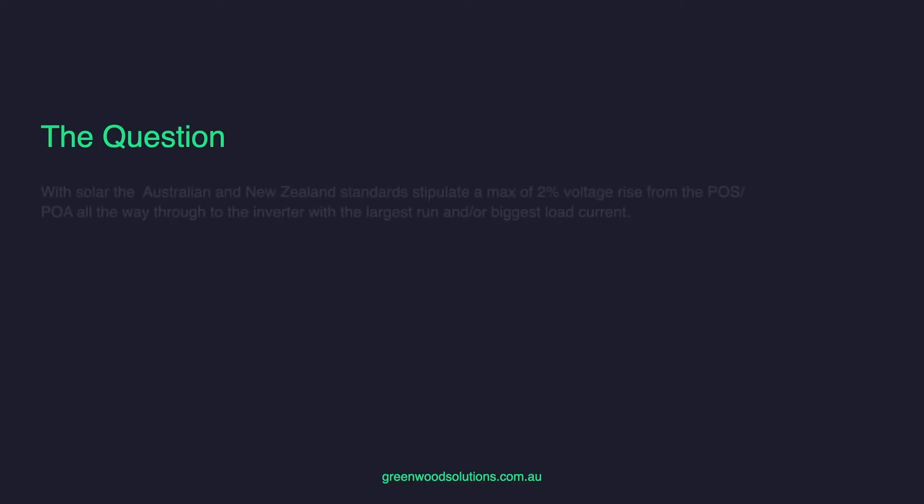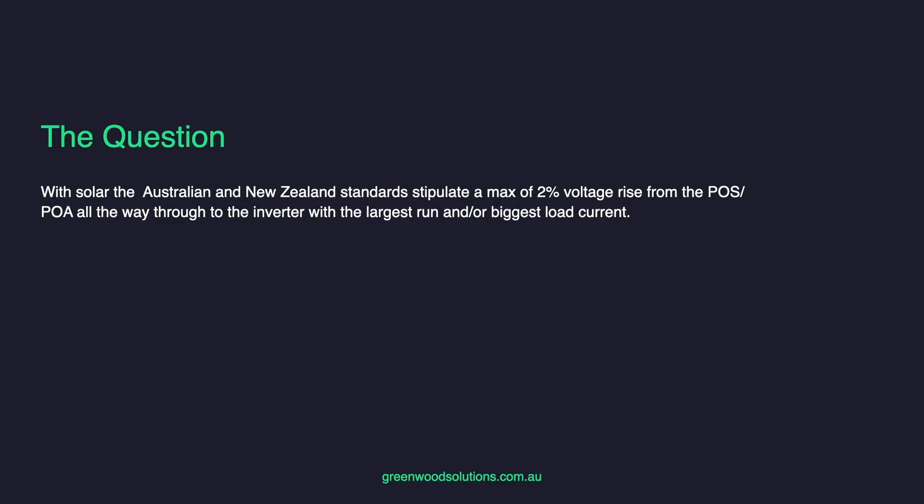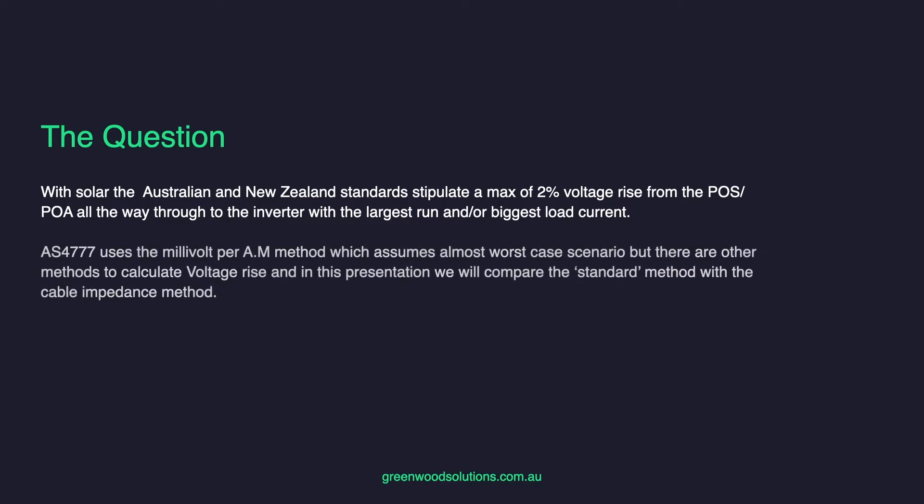The Australian and New Zealand standards stipulate a maximum of 2% volt rise from the point of supply all the way through to the inverter with the largest run and/or the biggest load current. AS4777 uses the millivolt per amp metre method, which assumes almost the worst case scenario, but there are other methods to calculate voltage rise. In this presentation, we will compare the standard method with the cable impedance method.